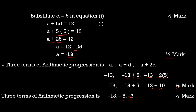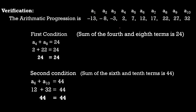To cross-check the answer, we calculate up to 10 terms of the AP starting from −13, −8, −3, and keep adding the common difference 5: 2, 7, 12, and so on. Checking the first condition: a₄ + a₈ = 2 + 22 = 24. The first condition is confirmed correct.